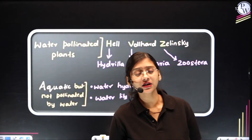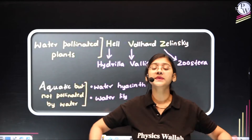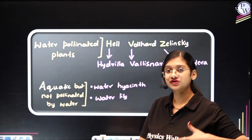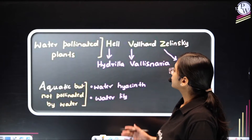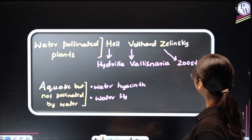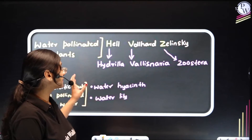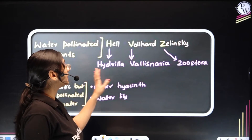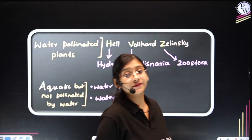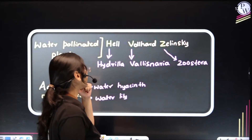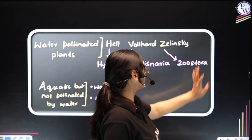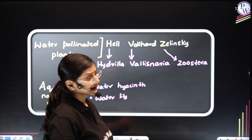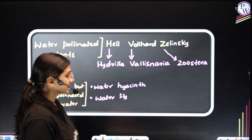So we will be studying different types of pollination and different agents involved in pollination in this chapter. Let's start with water-pollinated plants — plants which get pollinated with the help of water. Some of the examples are Hydrilla, Vallisneria, and Zostera. There is a hack to remember these — HWZ, like Hel-Wolhard-Zelensky from chemistry. So Hydrilla, Vallisneria, and Zostera use water for pollination.